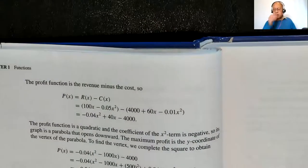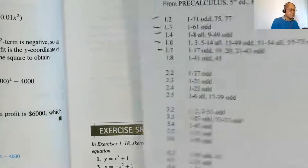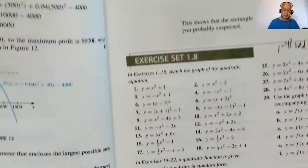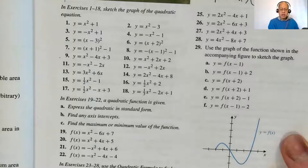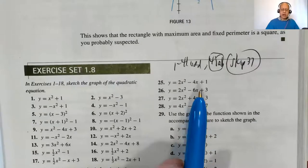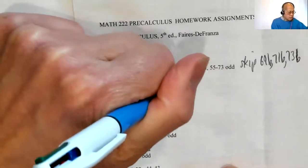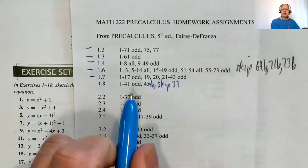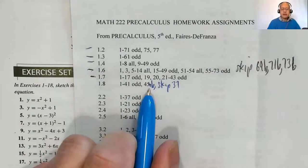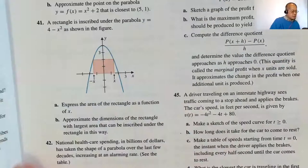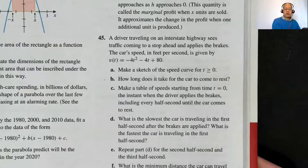Let me show you the problems for section 1.8. The assignment is problems 1 to 41 odd and problem 45. I'm changing it slightly: skip problem 37, and for problem 45 just do parts A and B. So: 45 A and B, skip problem 37.